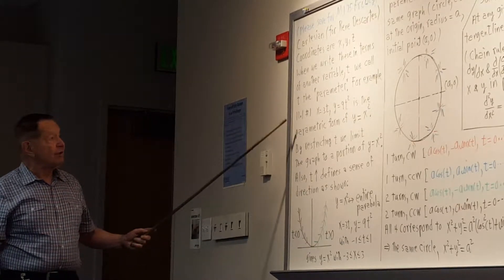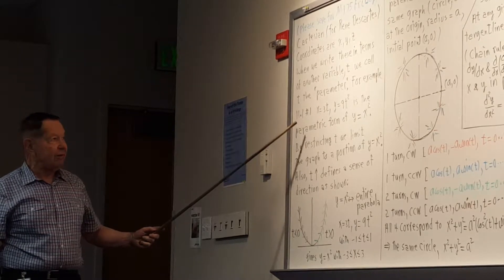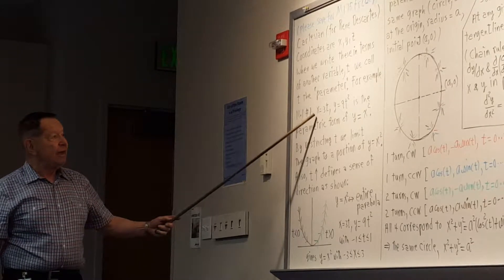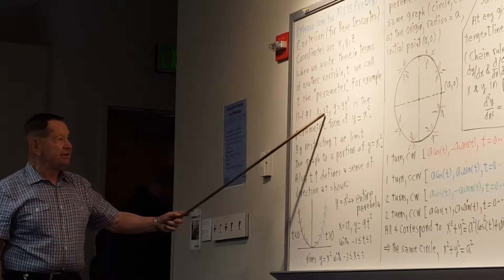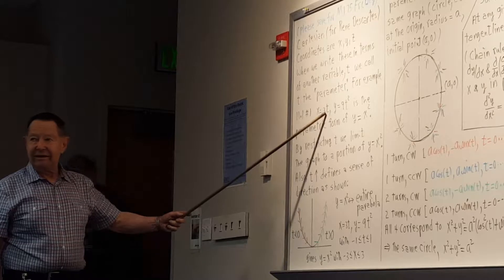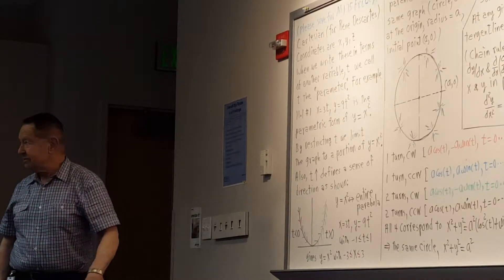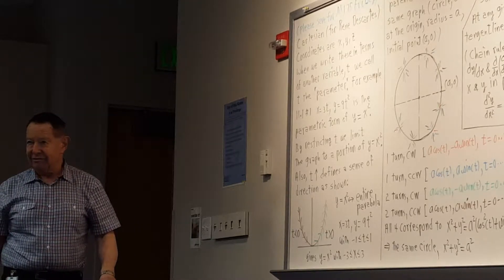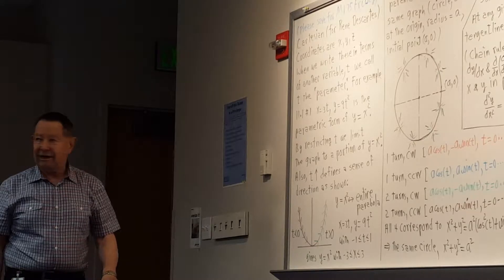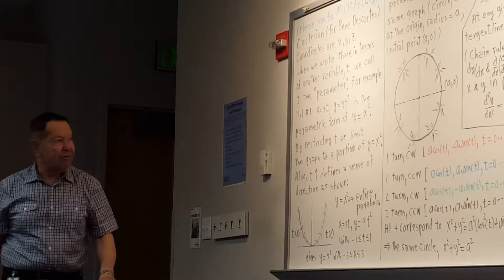For example, in problem one of section 11-1, we have X and Y — the Cartesian coordinates — expressed in terms of a new variable the book calls T. You can think of T as time if you want to. However, the parameter might often be an angle, for instance if you're thinking of polar coordinates.